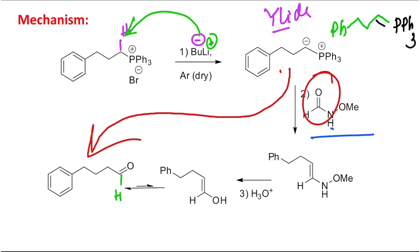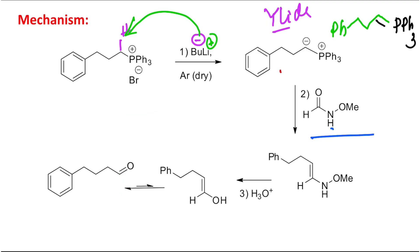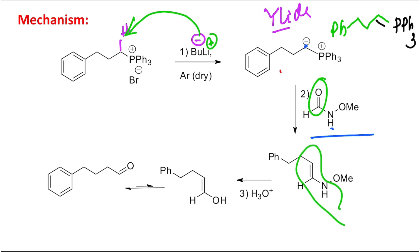But if you think from a different angle — this is also explained in this way. From a different angle: this Weinreb amide has a carbonyl group, and this is a carbanion. We know a Wittig reagent reacts with a carbonyl derivative to produce an alkene. So you can consider this as an alkene preparation, and this is not a simple alkene — this is an enamine derivative.